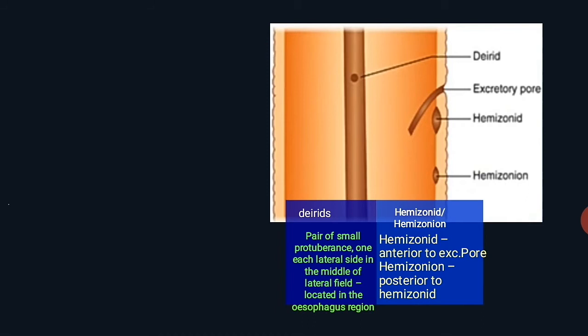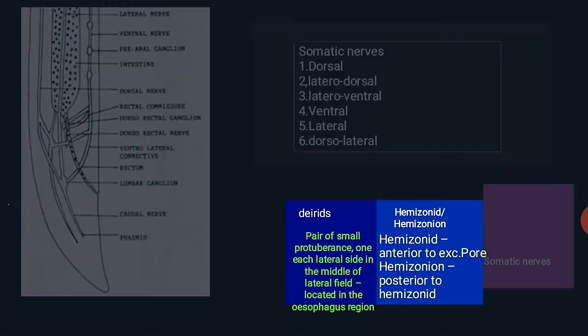The hemizonid is located on the ventral side of the body between the cuticle and hypodermis, either anterior or posterior to the excretory pore. Next, the hemizonion is a small nerve commissure structurally identical to the hemizonid, situated always posterior to the hemizonid.